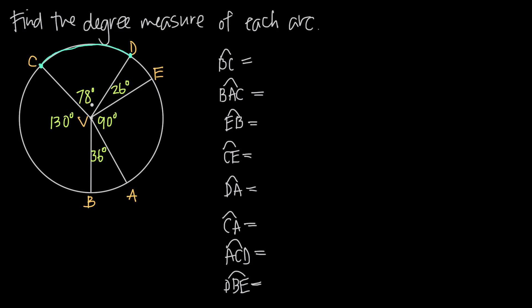For example, I have this interior angle here — angle CVD — indicated at 78 degrees. So that interior angle measure is 78 degrees, which means the intercepted arc that relates to angle CVD is also going to have a degree measure of 78 degrees. The intercepted arc is the arc whose endpoints are on the edges of the angle, with all points on the arc in the interior of the angle. So the intercepted arc of angle CVD is arc CD.